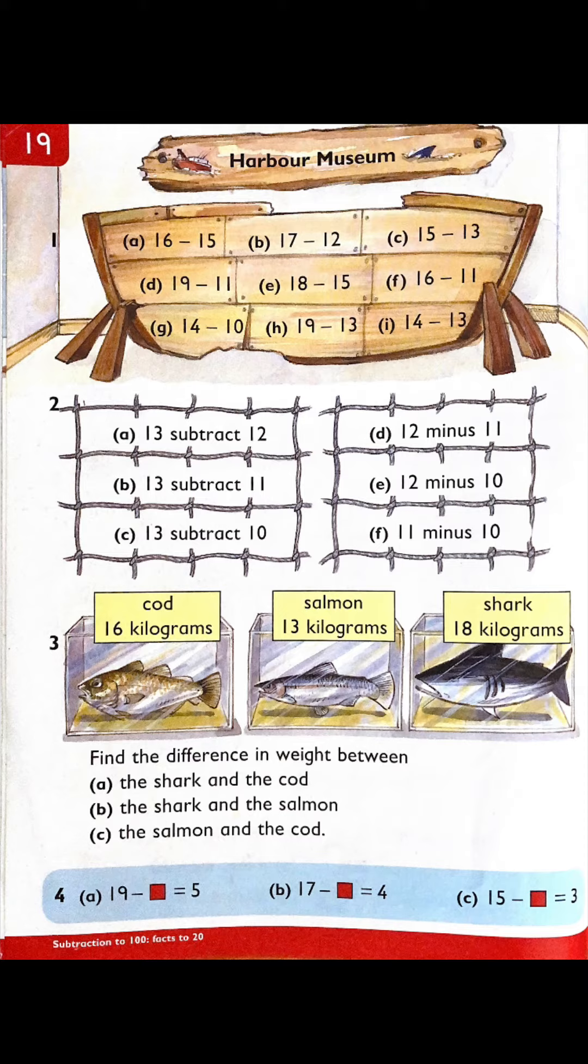Number three: you have a cod that's 16 kilograms, salmon that's 13 kilograms, and a shark that's 18 kilograms. So you need to find the difference in the weight between the shark and the cod, the shark and the salmon, and the salmon and the cod. What do you think your calculation is going to be?